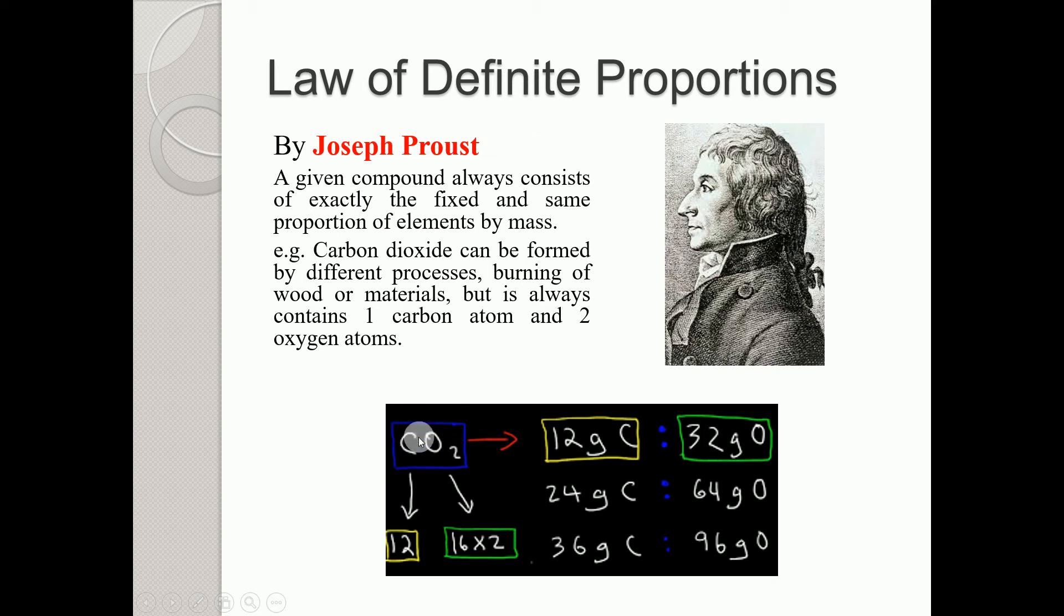This compound has exactly a fixed proportion of carbon element and a fixed proportion of oxygen element. It always contains one carbon atom and two oxygen atoms, by whichever means you produce it. This is what's important about this law, given by Joseph Proust.